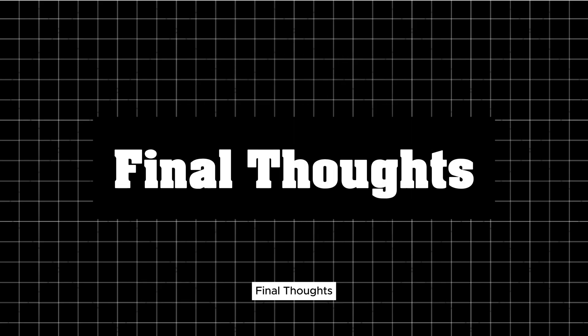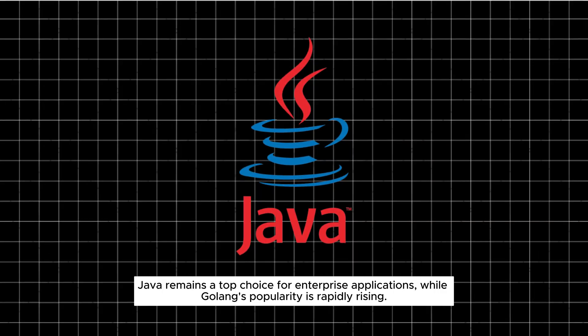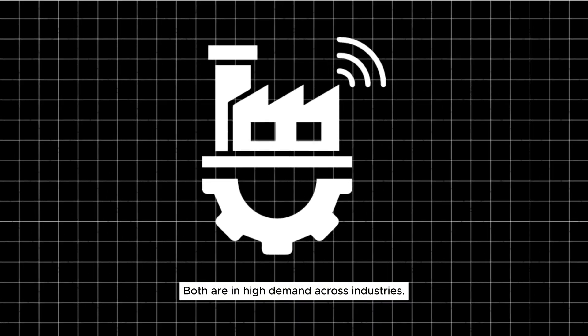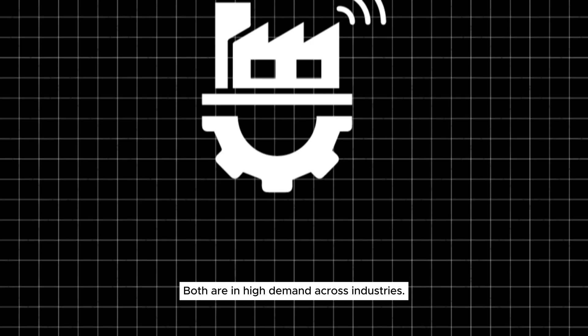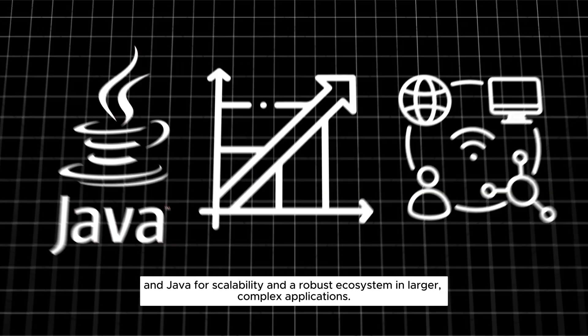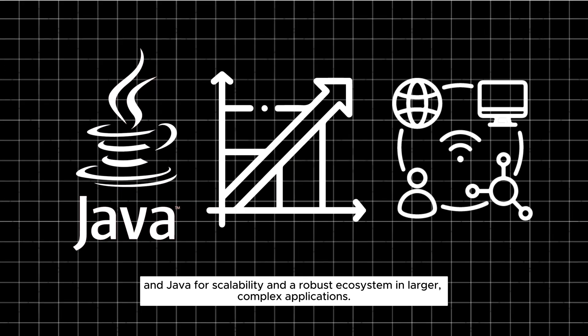Final thoughts: Java remains a top choice for enterprise applications, while Go's popularity is rapidly rising. Both are in high demand across industries. Choose Go for speed and concurrency in smaller projects, and Java for scalability and a robust ecosystem in larger, complex applications.